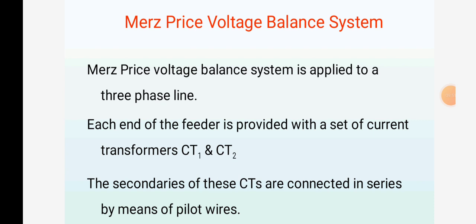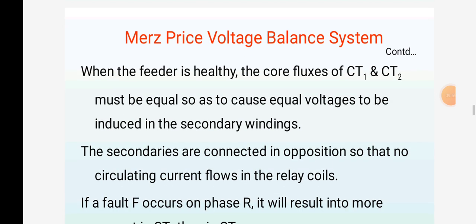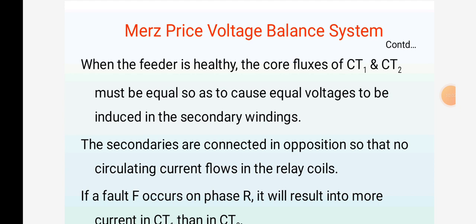The secondaries of these CTs are connected in series by means of pilot wires. When the feeder is healthy, the core fluxes of CT1 and CT2 must be equal so as to cause equal voltages to be induced in the secondary windings. The secondaries are connected in opposition so that no circulating current flows in the relay coils. If a fault F occurs on phase R, it will result in more current in CT1 than in CT2.